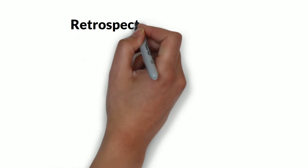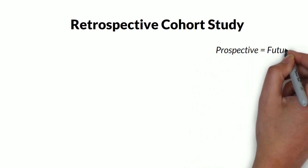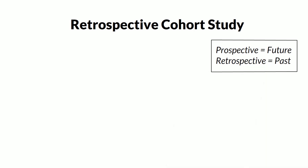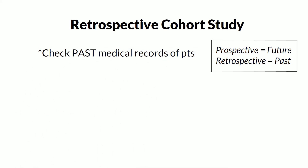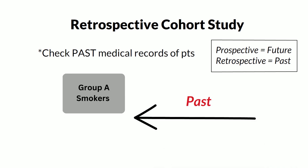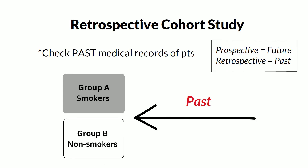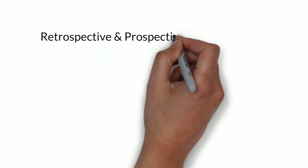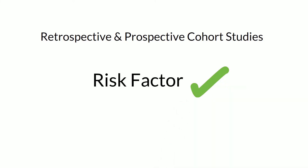Now let's look at what a retrospective cohort study is. Retrospective means going back in time — prospective is the future, retrospective is the past. So in this type of study, you go into the past, check medical records of patients, and find a group of people with the risk factor and without the risk factor. For example, you analyze past medical records and find a group of people who smoke and who don't smoke, then contact them to ask if they have lung cancer or not.